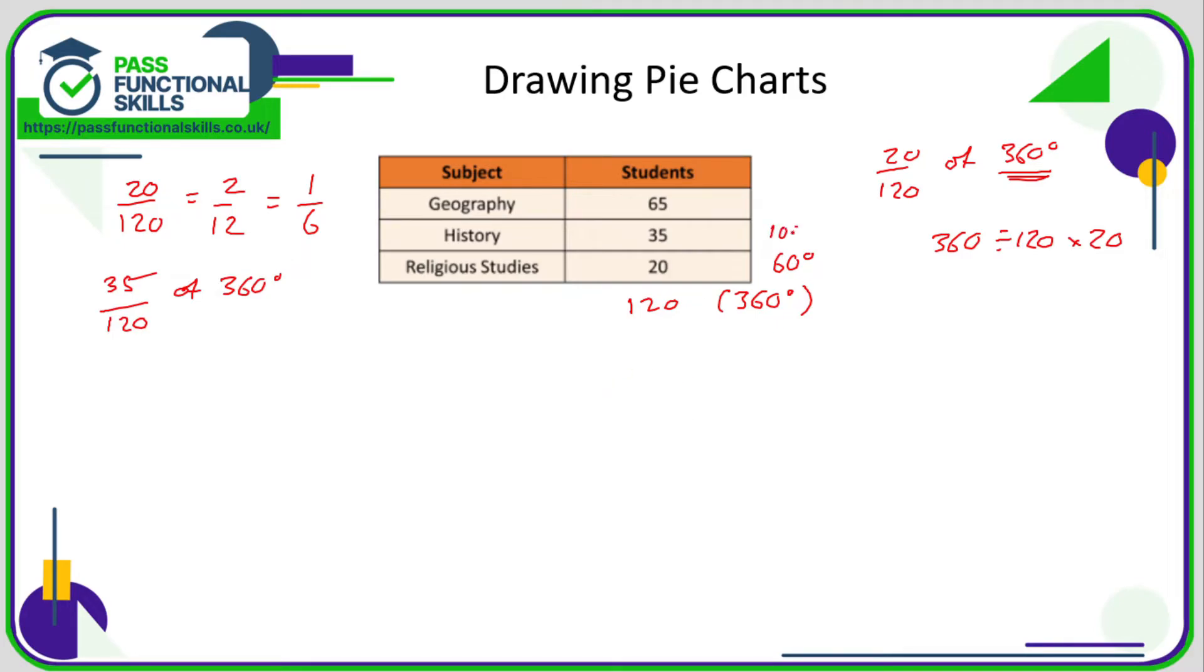And for geography, we want to work out 65/120 of 360. Why is it 120? Because it's 65 out of the total of 120 students. Take our total 360 degrees, divide it by 120, multiply by 65. That corresponds to 195 degrees.